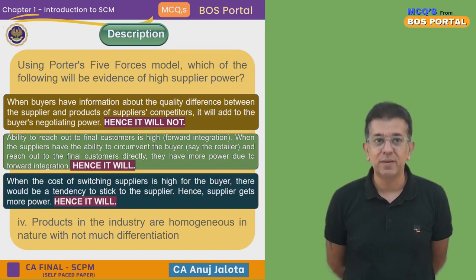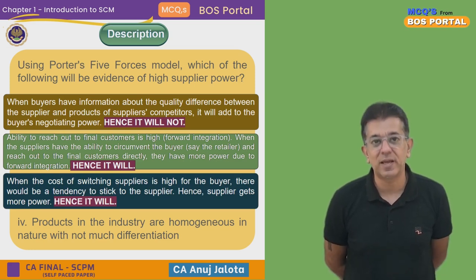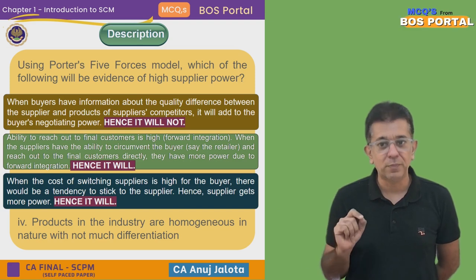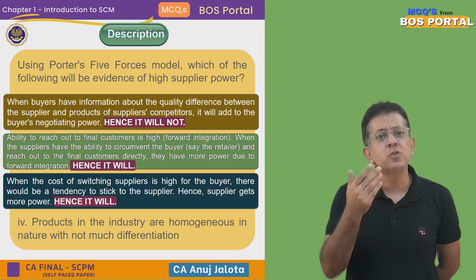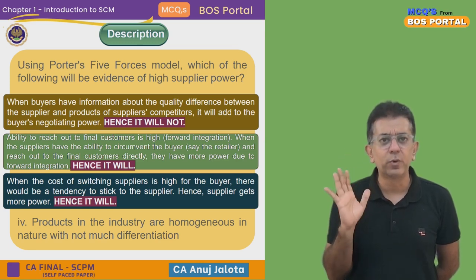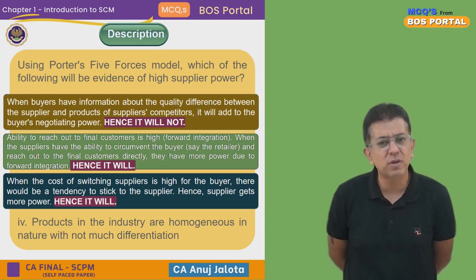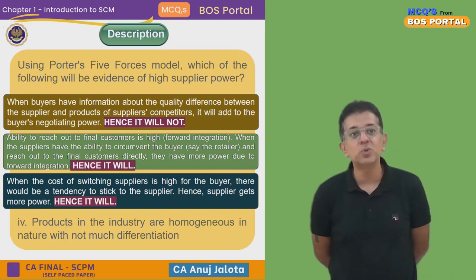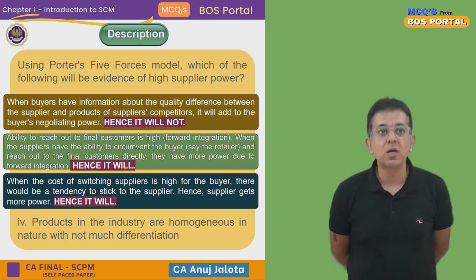Option three: cost of switching is high for the buyer. At that time, the bargaining power of the supplier becomes very high — there will be a tendency to stick to the same supplier, giving the supplier more power. Example: the person who prints my books has the soft copy of all my books and is used to my style. If I tell him I want books by tomorrow, he will do it. I don't know if any other supplier would do that, so my cost of switching is very high.